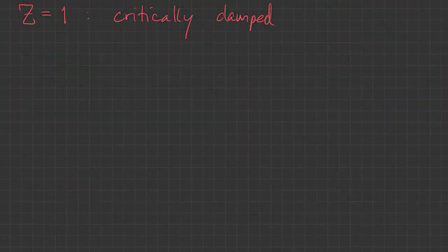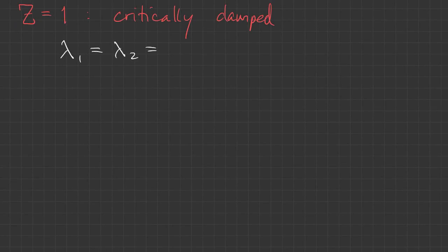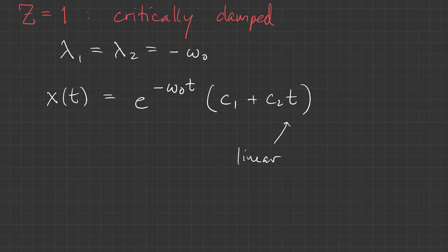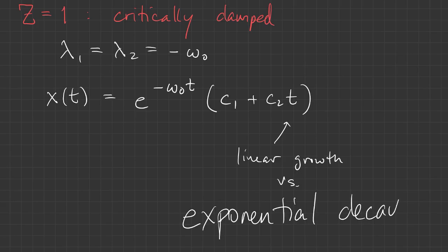When the damping coefficient equals 1, we say the system is critically damped. We get a double eigenvalue at -ω₀. That means we have a solution which is an exponential times c₁ + c₂t. With this t term, we're throwing in a little bit of linear growth. However, when you compare that to exponential decay, it's like Bambi versus Godzilla—Godzilla's going to win.